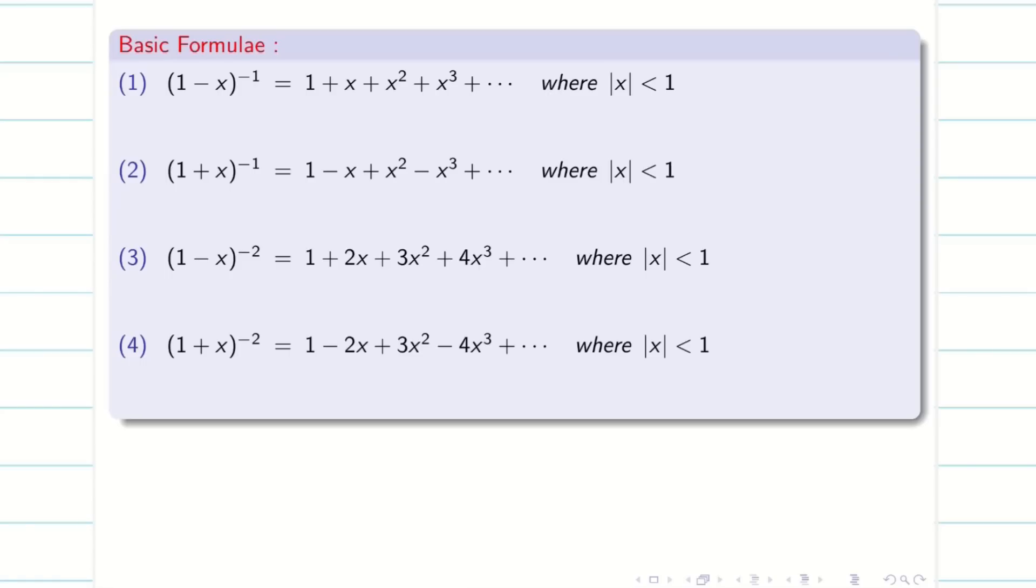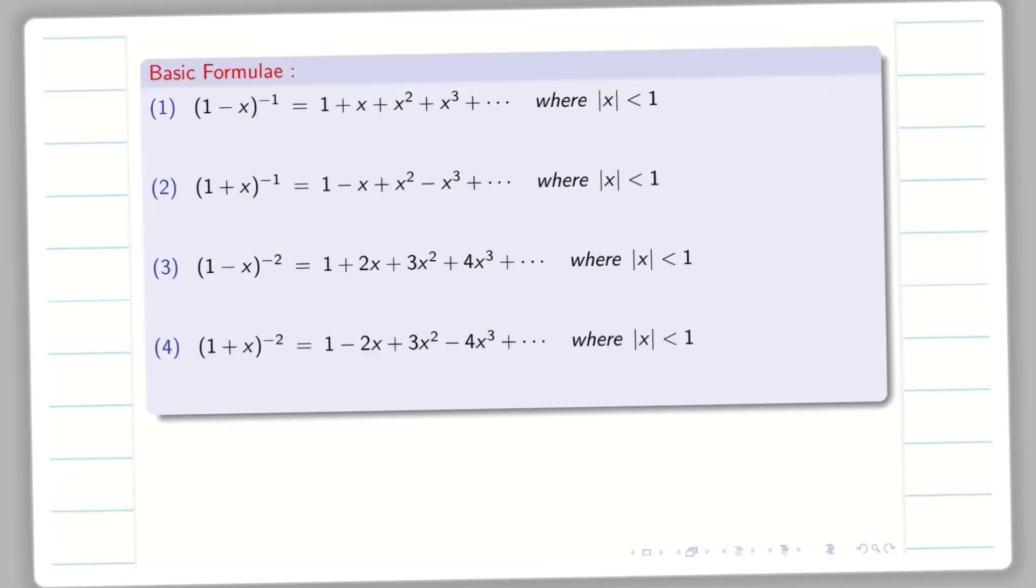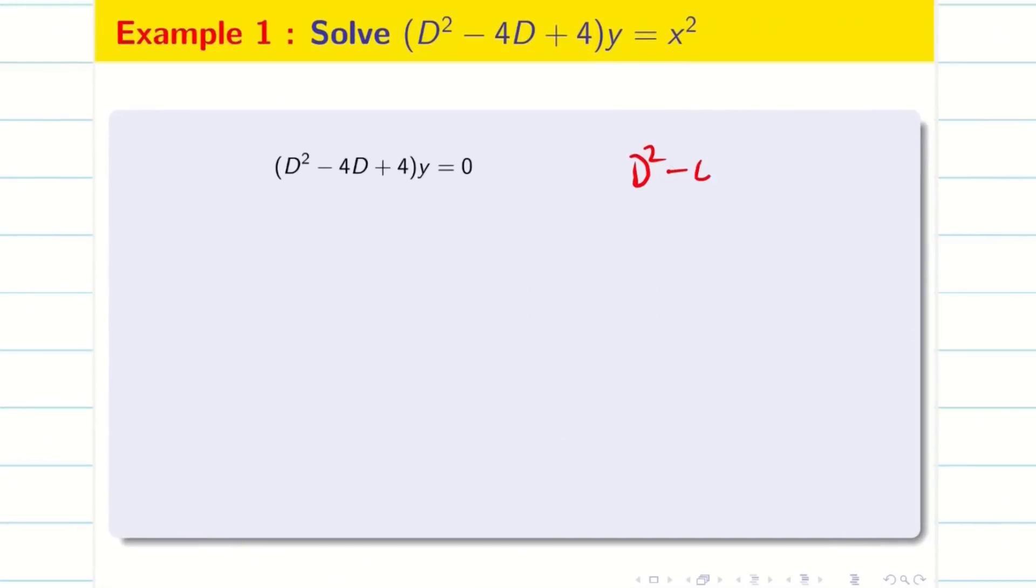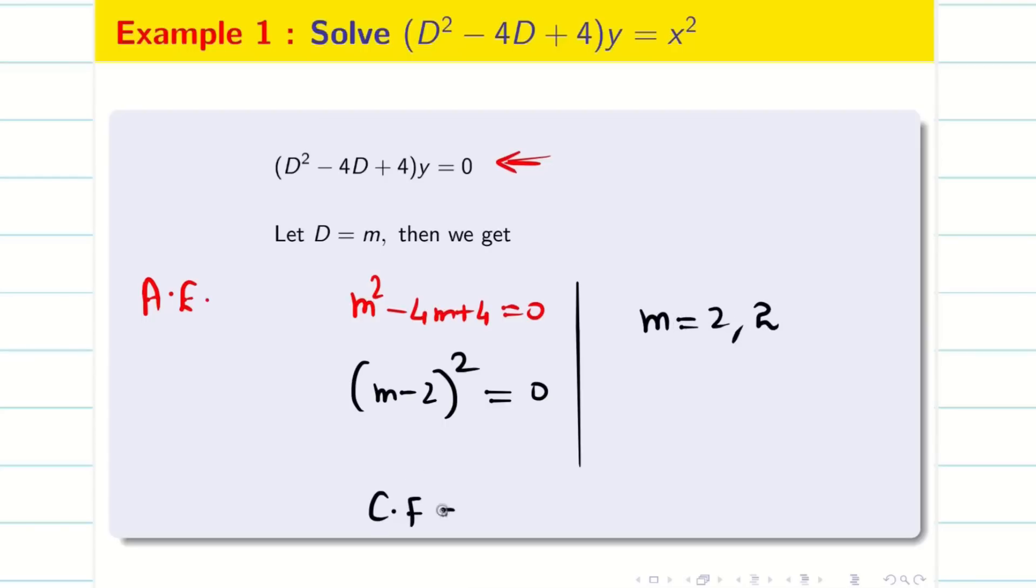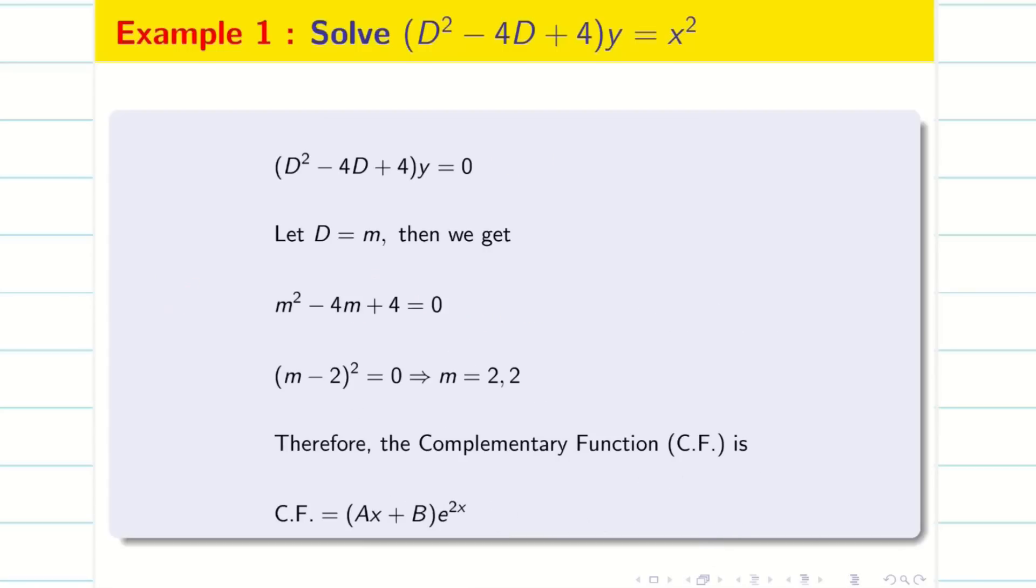As usual, I do two problems which make you more comfortable to do whatever problem comes for your exam. Solve d square minus 4d plus 4 into y equals x square. First, as usual, we have to find CF. To find the CF, we need the auxiliary equation. For this, we put d equal to m: m square minus 4m plus 4 equal to 0. It is very easy to see this is m minus 2 whole square. So, we will be getting m equal to 2, 2. Therefore, my CF is going to be ax plus b times e power 2x because the roots are real and equal.